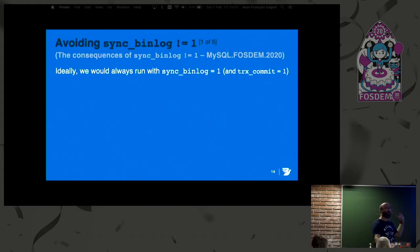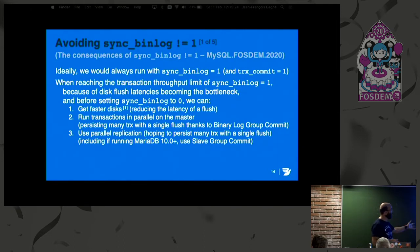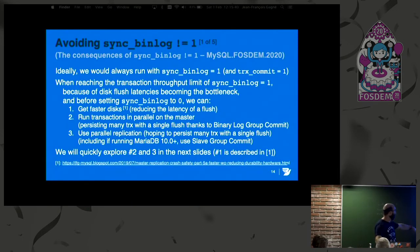We would like to avoid setting Sync Binlog to something different than 1. The solutions are either to get faster disks, or to run things in parallel so that a single sync will persist many transactions at the same time — this is binary log group commit on the master. Or, using parallel replication, running more than one transaction at the same time on slaves so you can commit many things simultaneously.